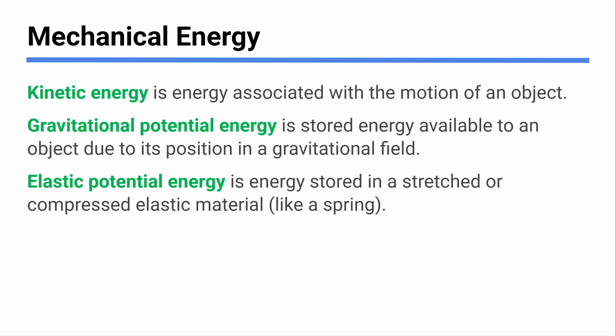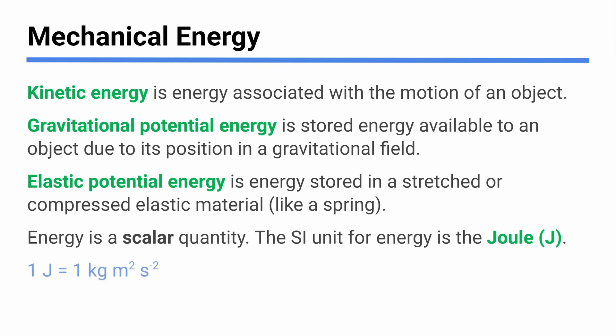Elastic potential energy is another way you can store energy — with something stretchy like an elastic material. A spring is the one we'll see most often, or a rubber band. Pull a rubber band, stretch it, and you've stored some energy inside it. Let it go and it'll go flying across the room. Those are our types of mechanical energy.